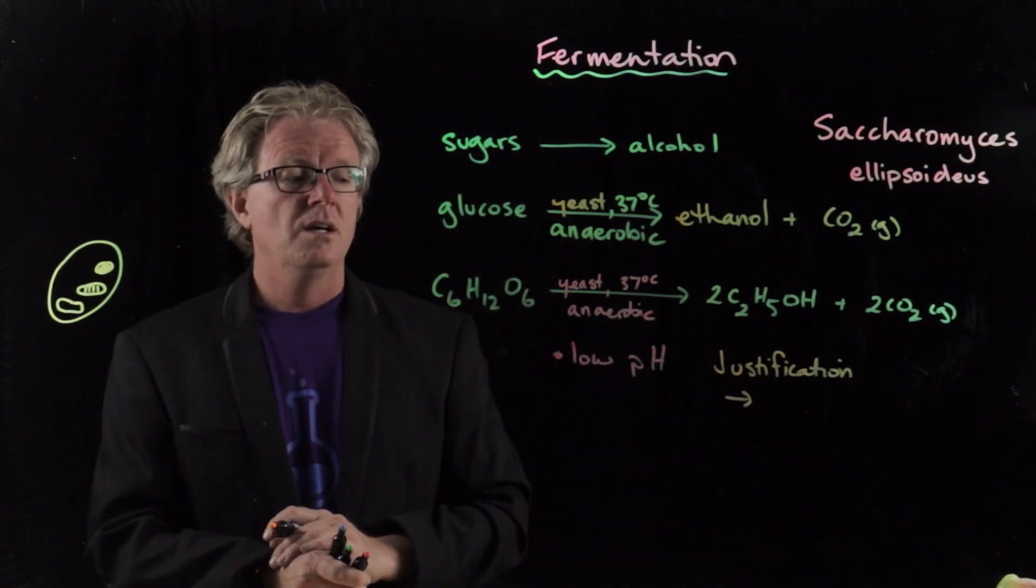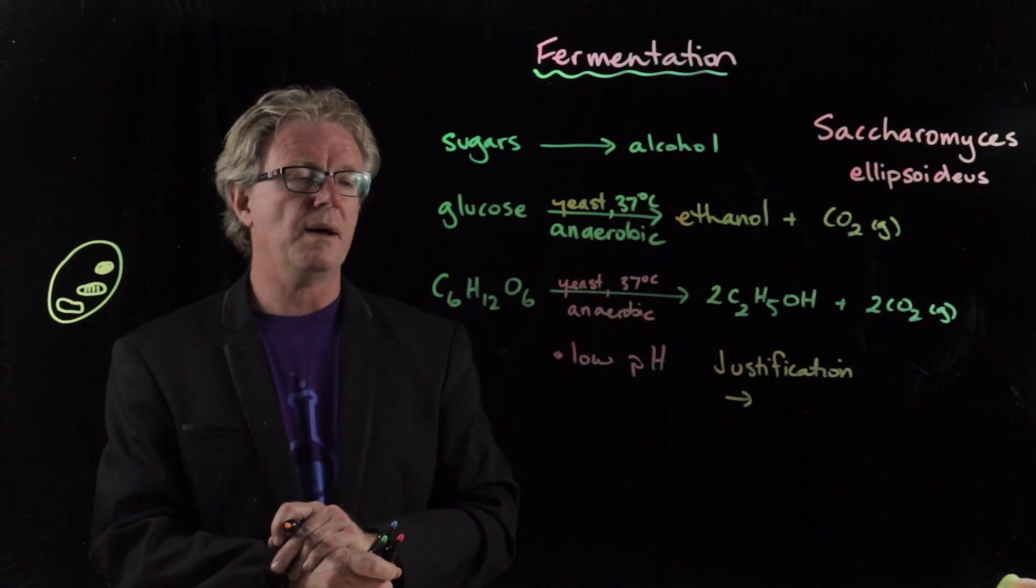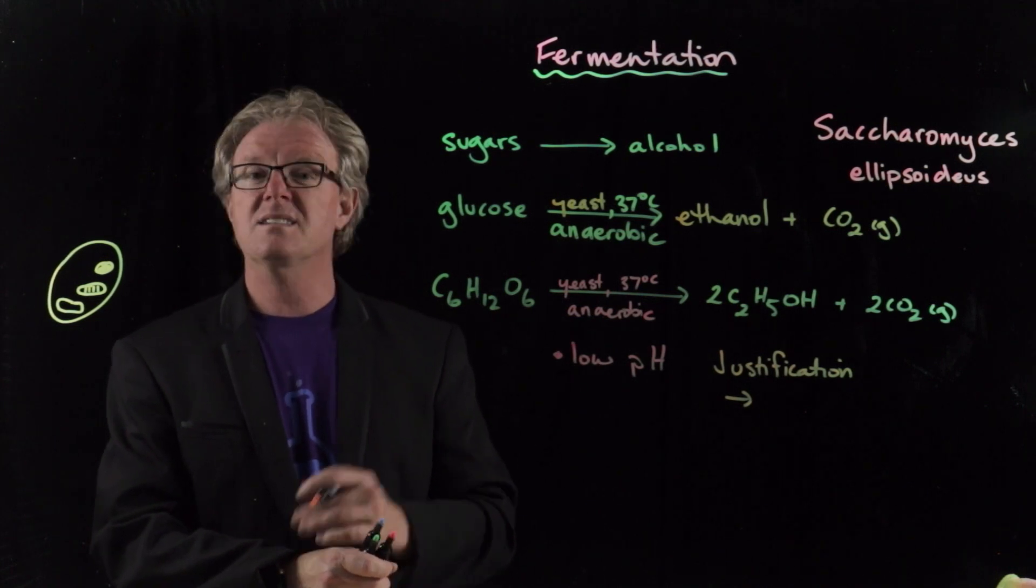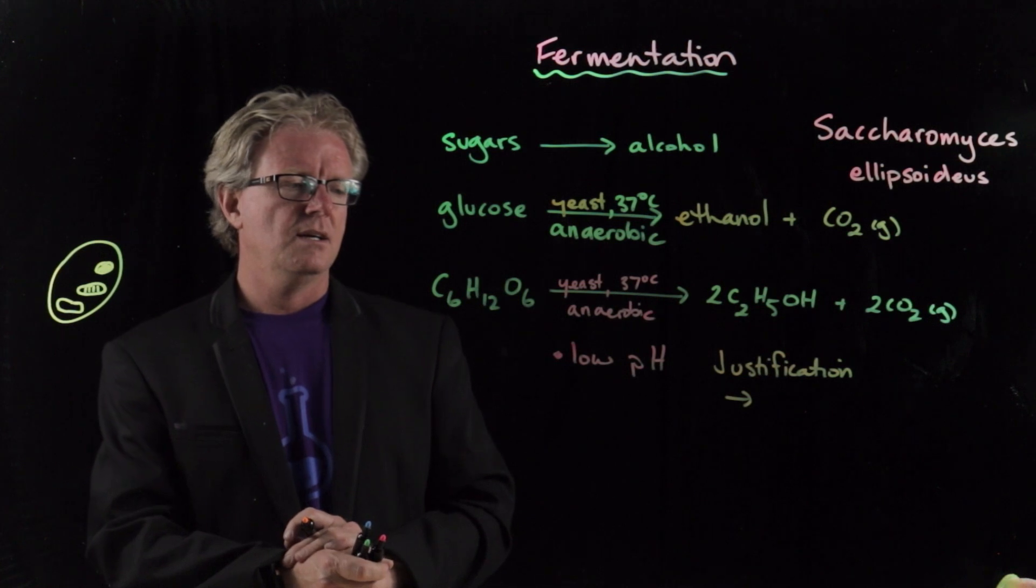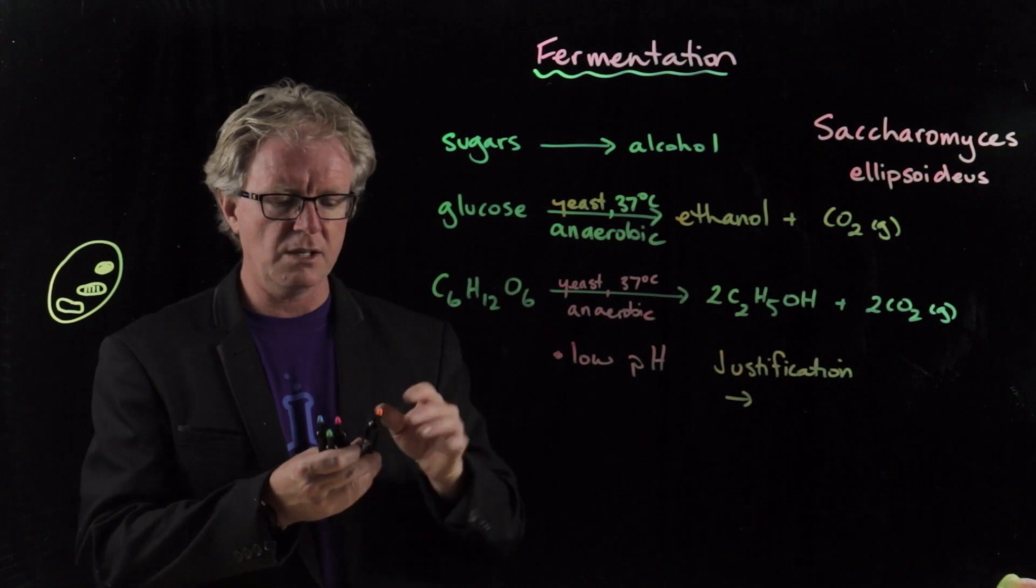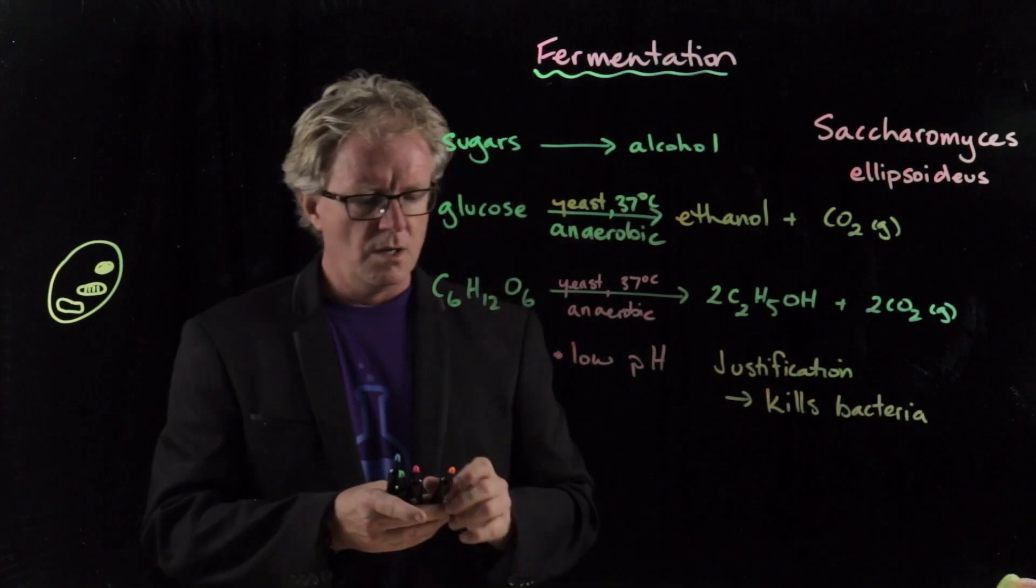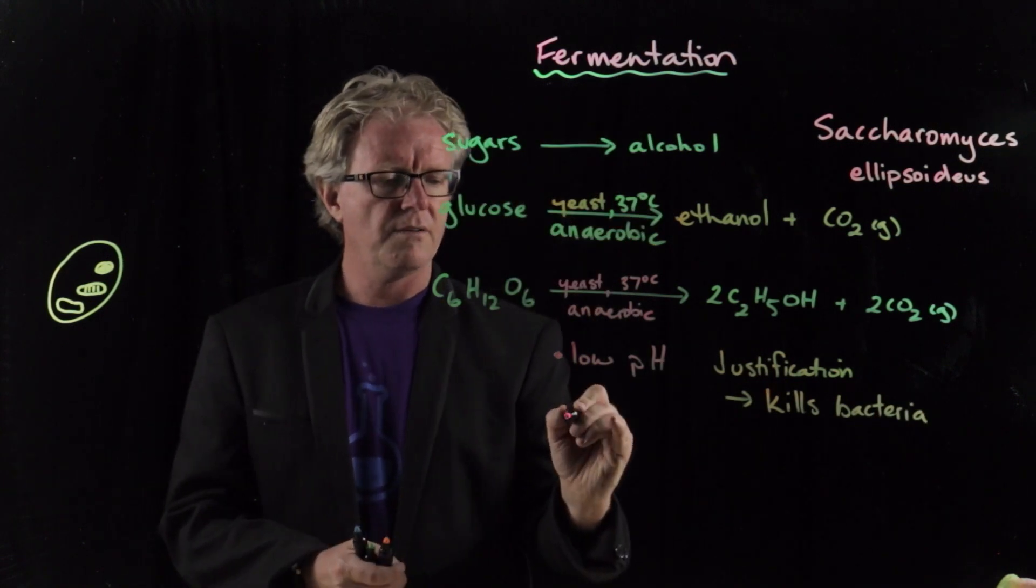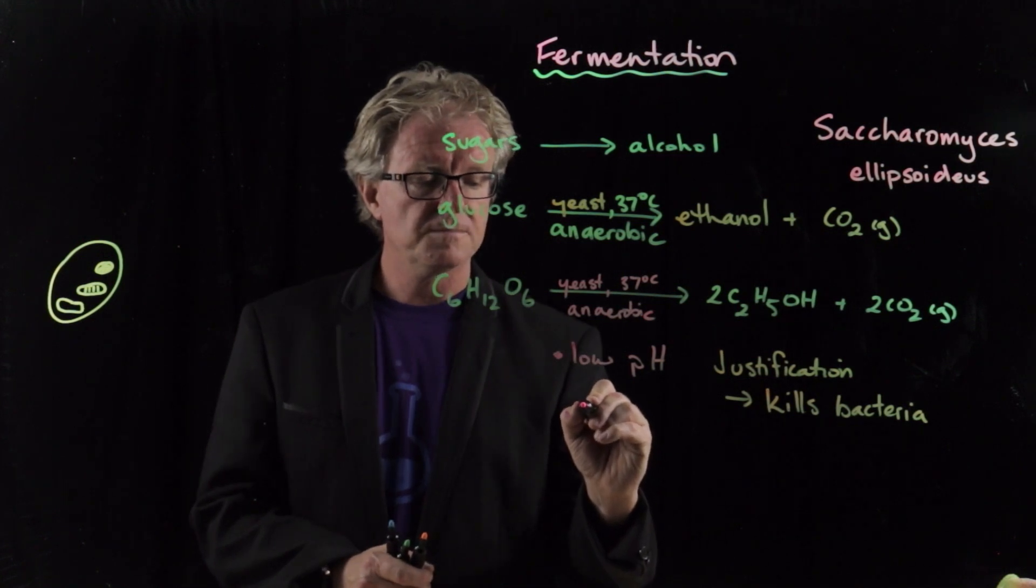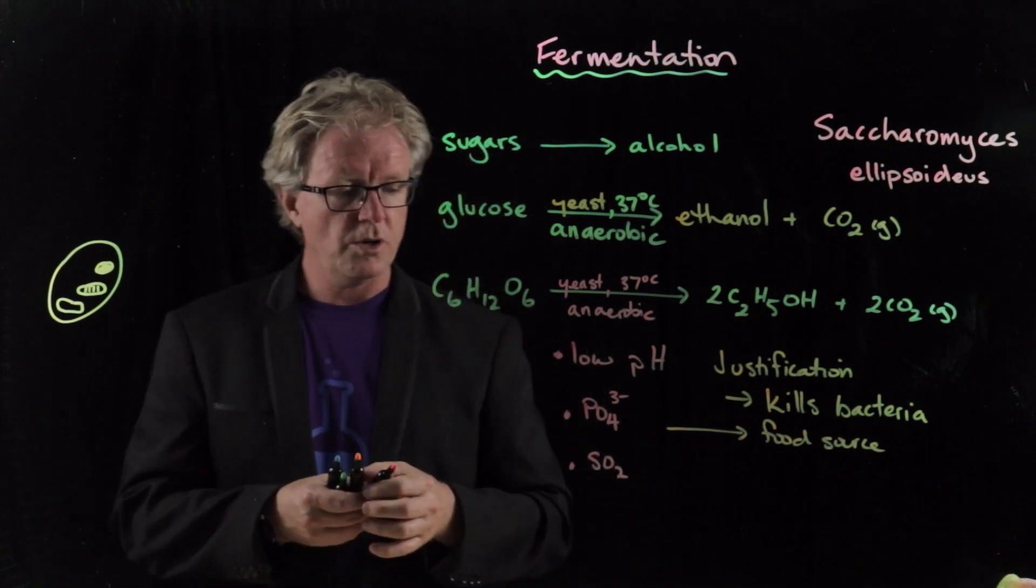We don't want bacteria in this reaction flask, okay? So bacteria which is everywhere is a bacteria called acetobacter. And acetobacter makes vinegar, right? Ethanoic acid. So we will end up having vinegar tasting wine if we have acetobacter in there. So we want to kill that and therefore we need low pH, right? So it kills bacteria. We also want to make sure that we have a food source for the yeast. So we can put in some phosphates and sulfates. Putting in sulfur dioxide can also help as well.